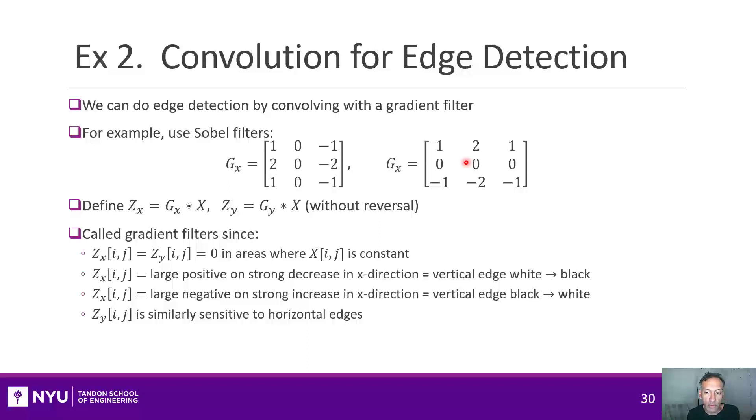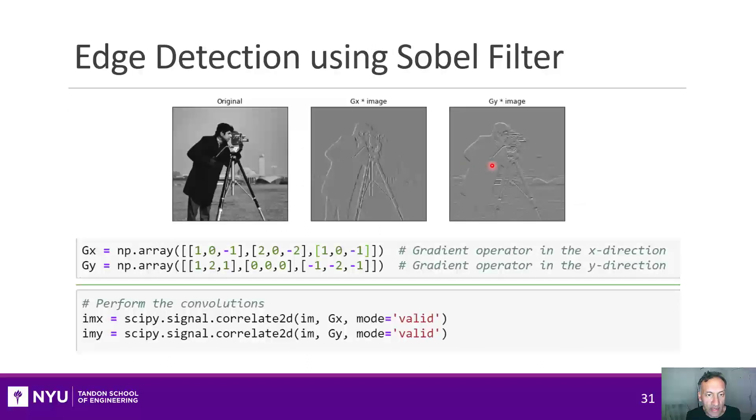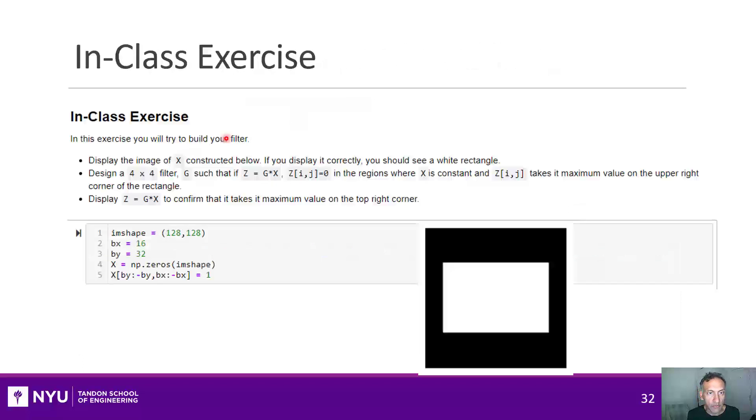So, one picks up vertical edges, and the other picks up horizontal edges. So, let's just illustrate that here. I can easily create these filters in Python, just manually, and then I can perform the correlate. And here's the original image, and then I correlate with the x. You'll see you get these strong positive values, that's the white values, when I'm going from white to black. And I get these strong negative values on vertical edges going from black to white. And similarly, if I correlate with gy, I get strong positive and negative values on the horizontal edges.